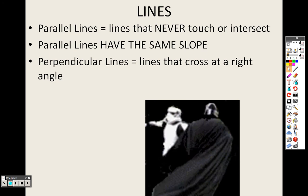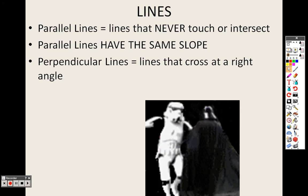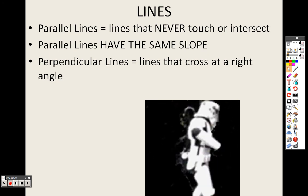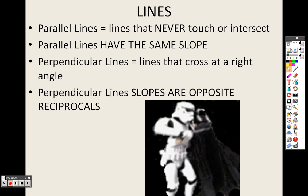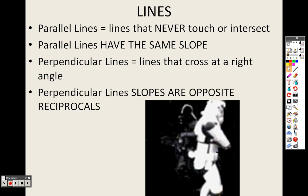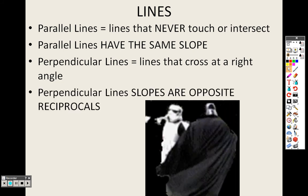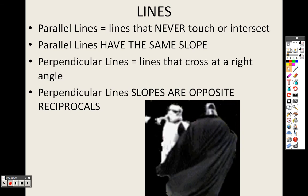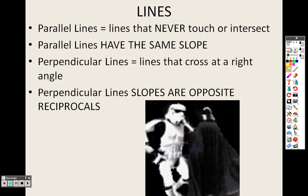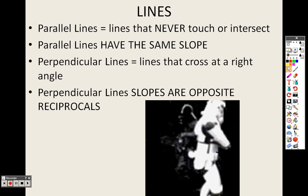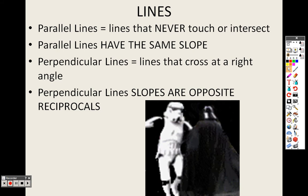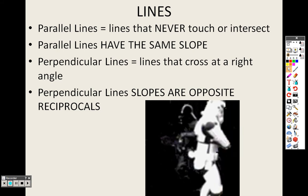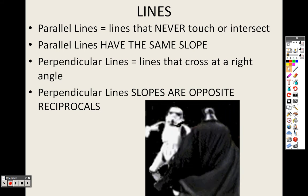Perpendicular lines are lines that cross at a right angle, so when the two lines cross each other, they form a right angle. Perpendicular lines have slopes that are opposite reciprocals. That means you flip them and make them negative. So remember: flip it, make it negative.